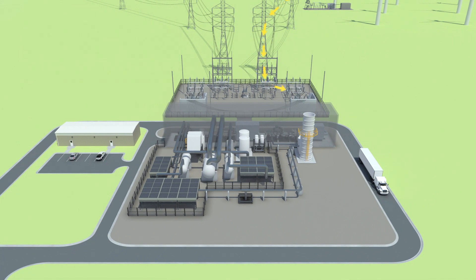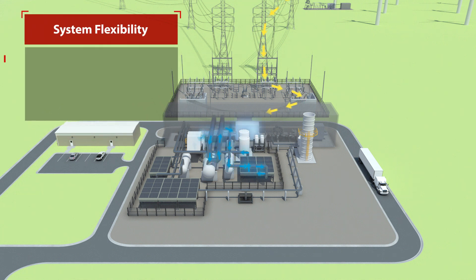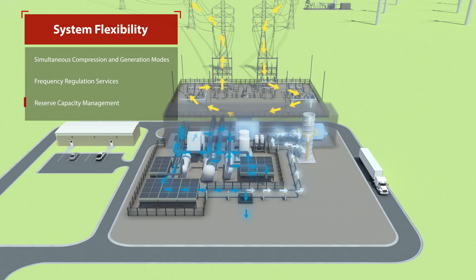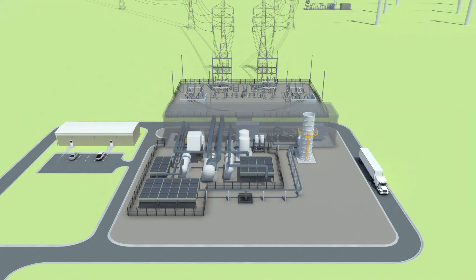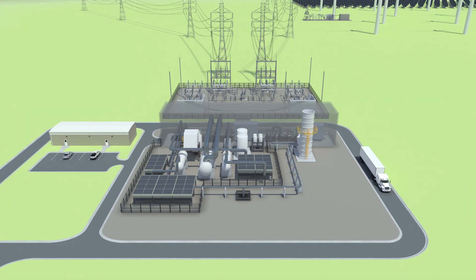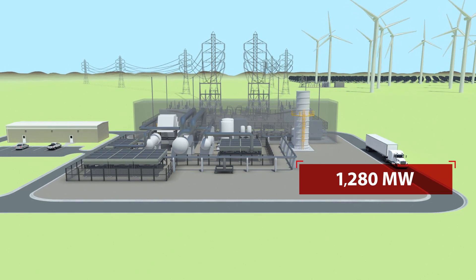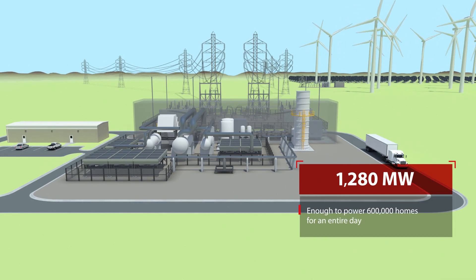During intermediate hours when consumer demand is moderate, the Dresser Rand SmartCASE can produce electricity while simultaneously diverting some compressed air aside for storage. At full capacity, the Dresser Rand SmartCASE plant, consisting of eight trains, is capable of generating 1,280 megawatts — enough to power 600,000 homes for an entire day.